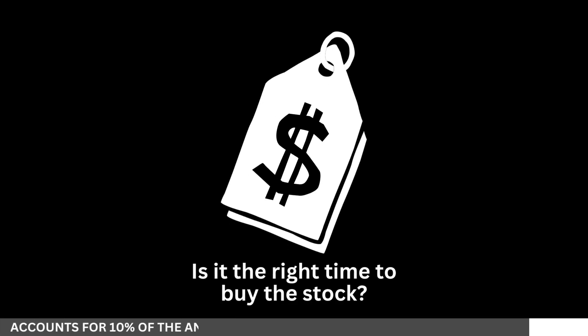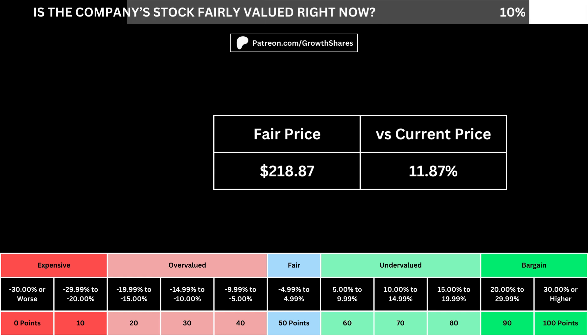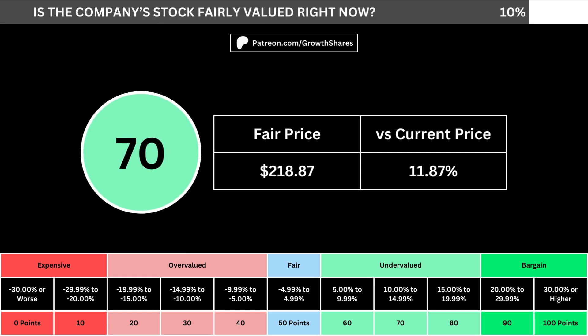But of course, we can't forget about the fair price and whether it's the right time to buy the stock. I use a discounted cash flow model taking into account a 10% margin of safety. That translates into the company's fair price and how many percentage points above or below its current price the stock is. When we compare those numbers with the table below, we can see where the company's stock lies in its intrinsic value spectrum right now.